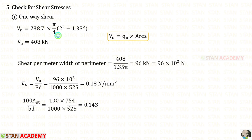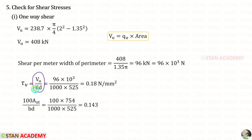Using the area, we find VU. Then we find the shear force per meter width of perimeter by dividing by the perimeter, getting 96 × 10³ N. Using the shear stress formula, we find tau V as 0.18 N/mm².